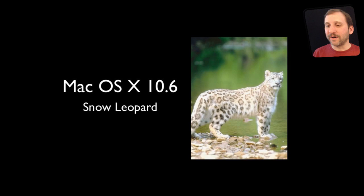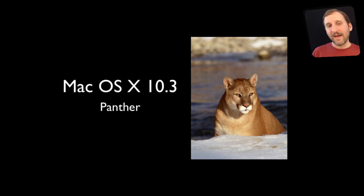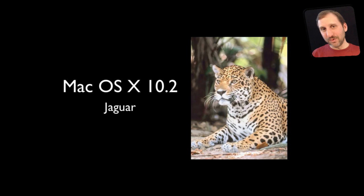Now before Leopard we had Tiger. Before that was Panther, and before that was Mac OS 10.2 which was Jaguar. Now this was the first time that Apple actually used the cat name publicly. Originally the cat names were just names that the software developers used inside of Apple — they weren't something that was used outside.